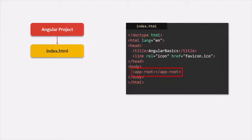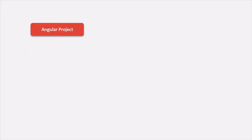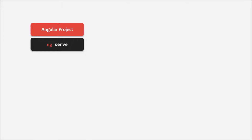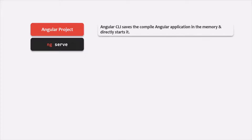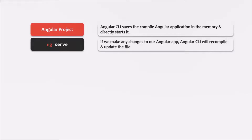In order to run our Angular application, we use an Angular CLI command ng-serve. This ng-serve builds our application but does not save the compiled application to the disk. It saves the compiled application in the memory and starts the development server. ng-serve also watches over the project — if we make any changes to the application, it will recompile and update the file.